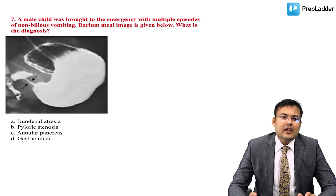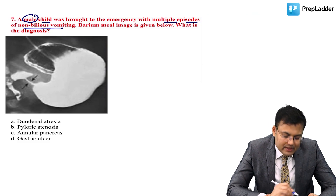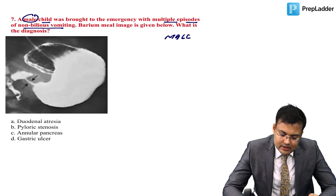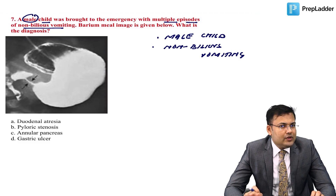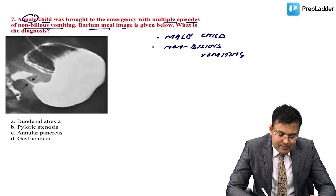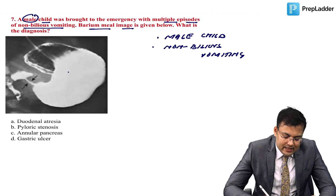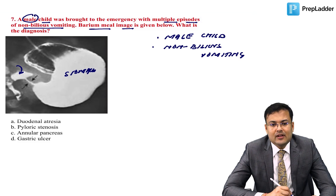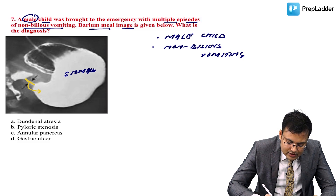Next question: a male child brought to the emergency with multiple episodes of non-bilious vomiting. Two clues: male child and non-bilious vomiting. A barium meal image is given. There is obstruction near the pylorus, with barium in the stomach and the duodenal cap visible. The narrow pyloric channel looks like a string — this is the string sign.